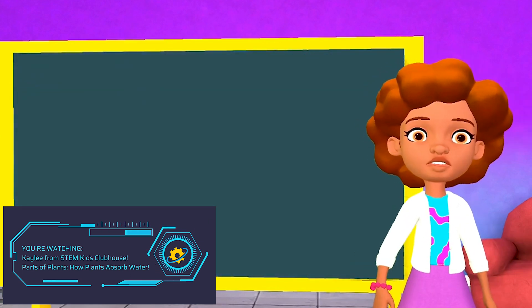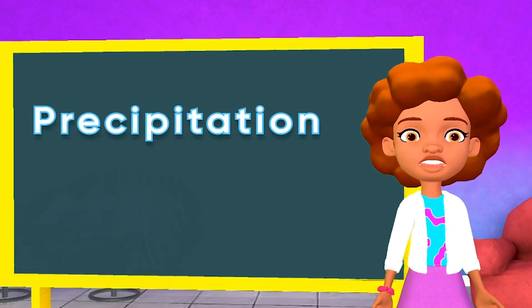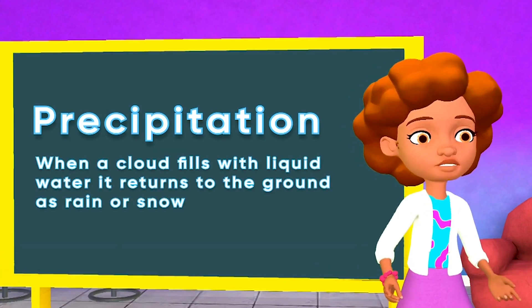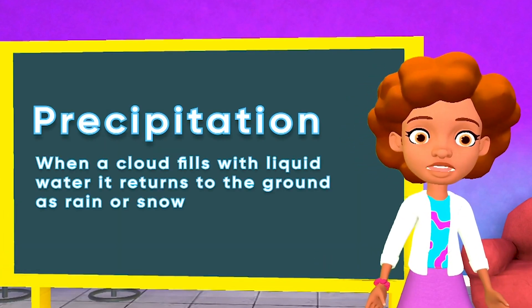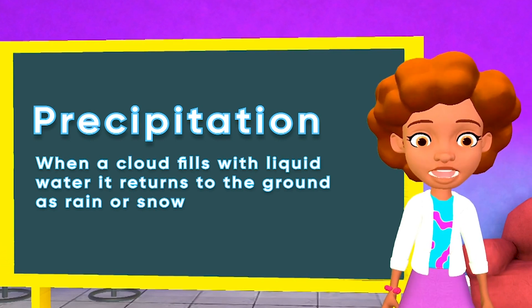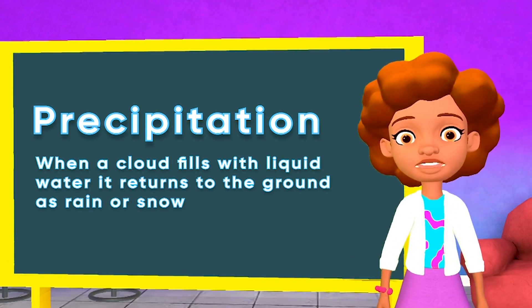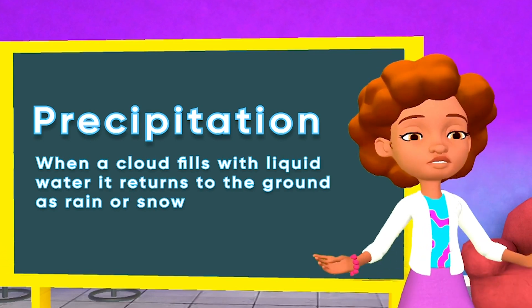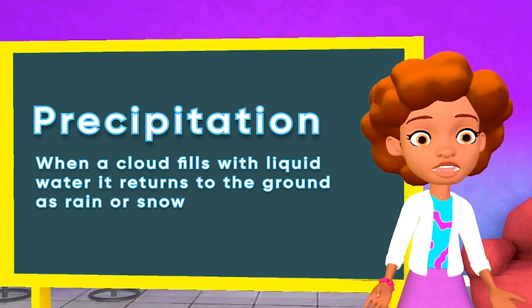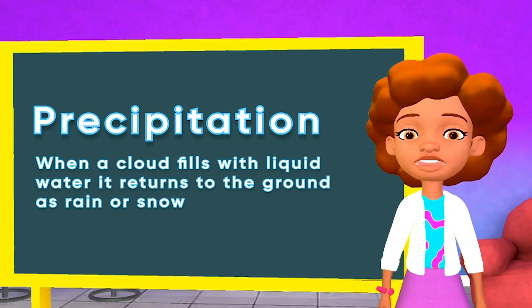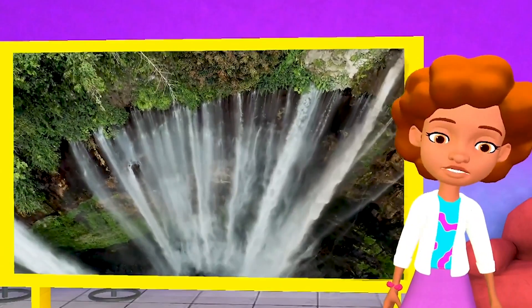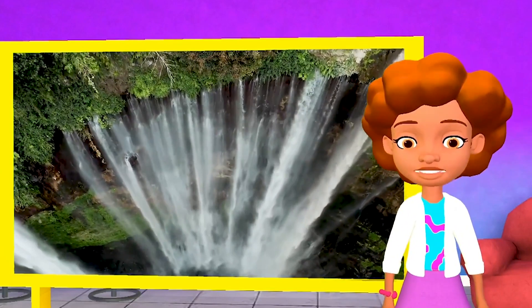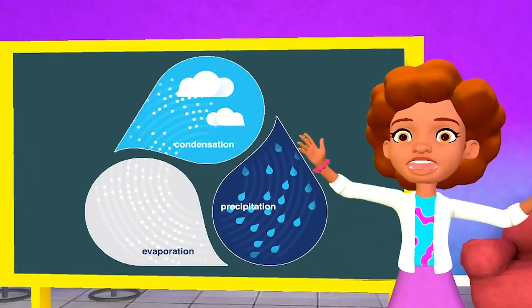Stage four is called precipitation. You might know this stage when you go outside and it's raining and you don't have an umbrella. When a cloud is filled with liquid water, it comes back down to the ground as rain or snow. This liquid water fills up the oceans, lakes, and rivers. Then the cycle starts all over again.